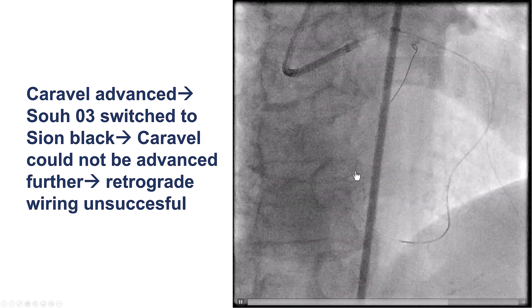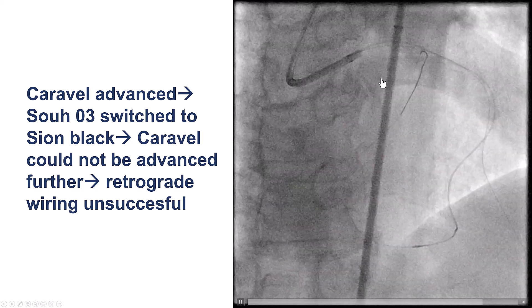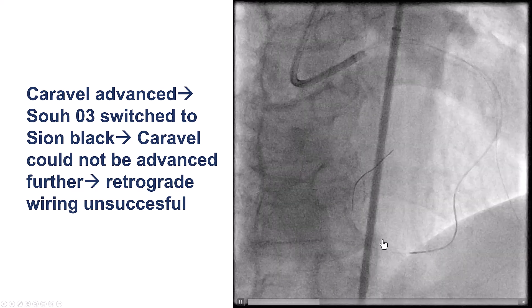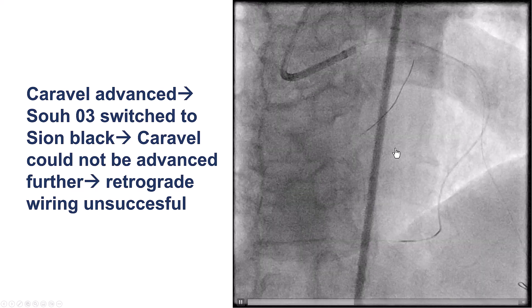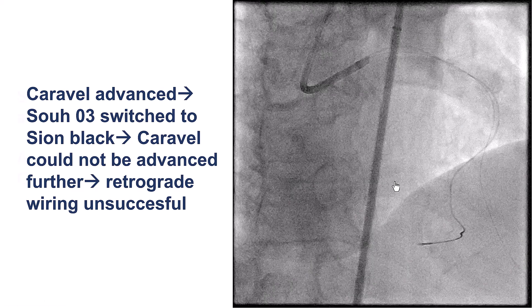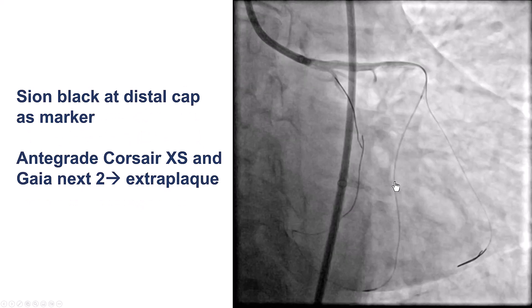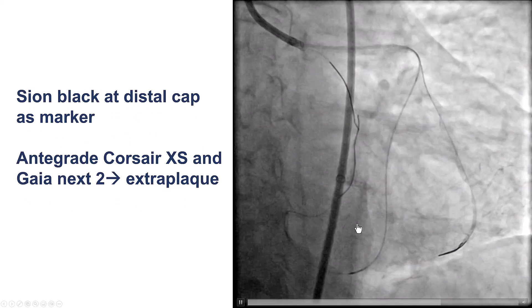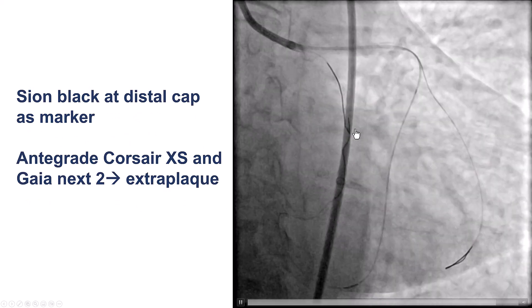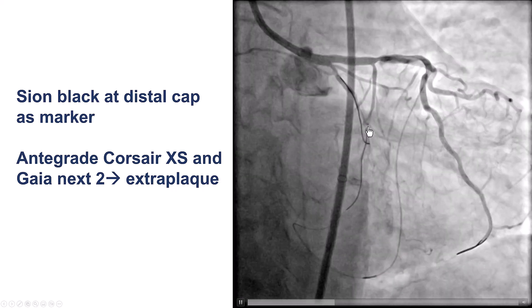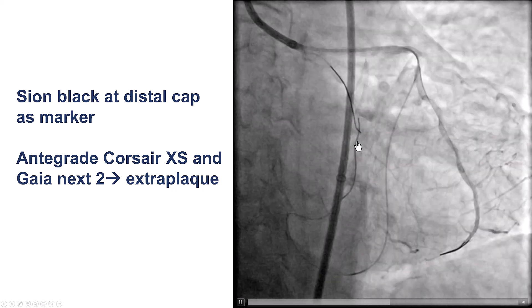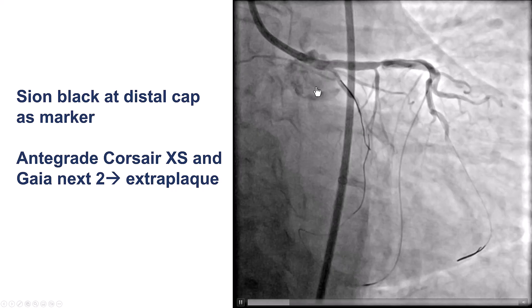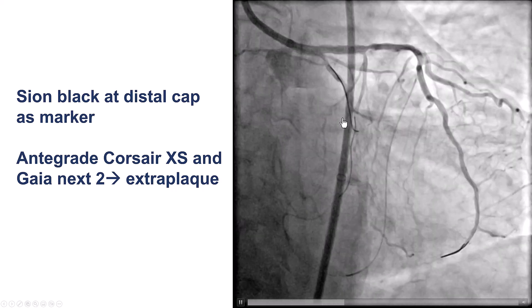If everything fails, one can use the retrograde wire as a marker and proceed with antegrade crossing. What we did was advance the retrograde Xeon black wire all the way to the distal cap and use that as a marker for antegrade crossing.